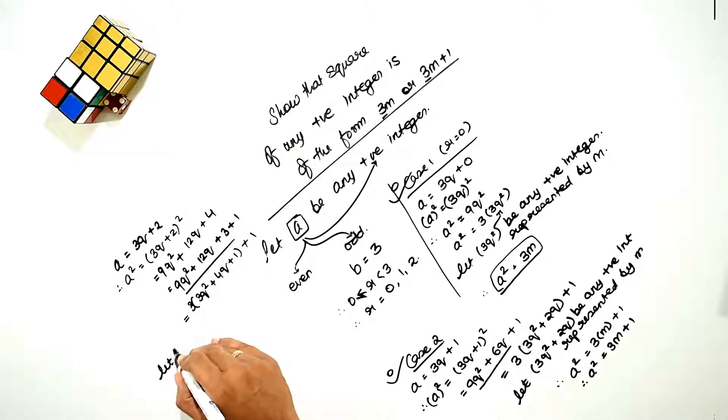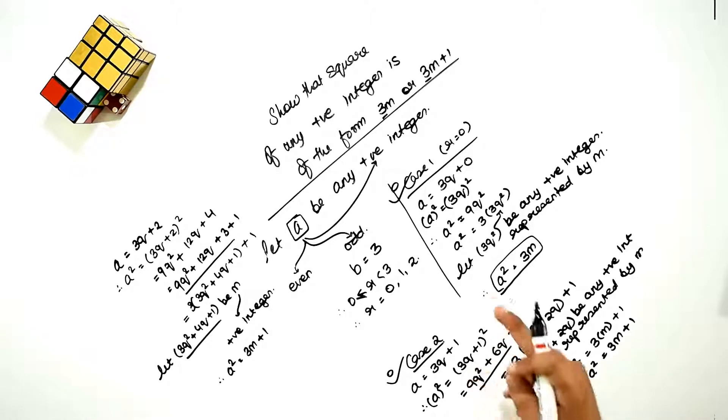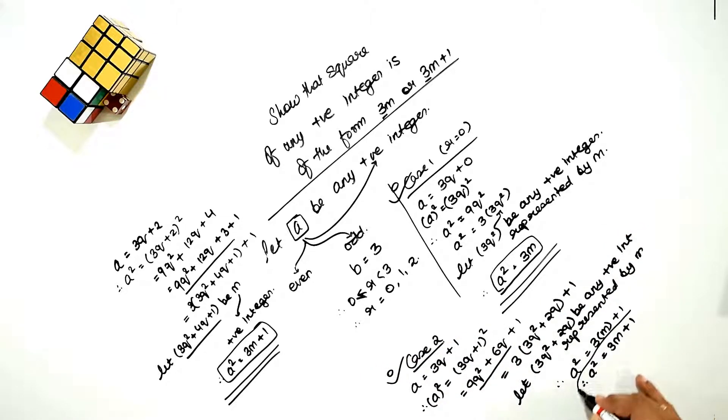And now we assume that 3q square plus 4q plus 1 in bracket is m, where m is a positive integer, which we have already solved. Therefore a square is equal to 3m plus 1 again. If it is not divisible by 3, then it will be in the form 3m plus 1, and this is how we prove that the square of any positive integer is of the form 3m or 3m plus 1. Thank you.